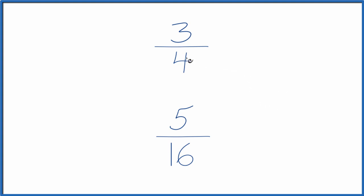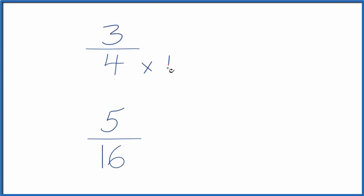And I can see that 4 goes into 16 four times. So I could multiply 4 times 4. So that equals 16. And then down here, we already have 16 in our denominator. So we could just keep this the same.